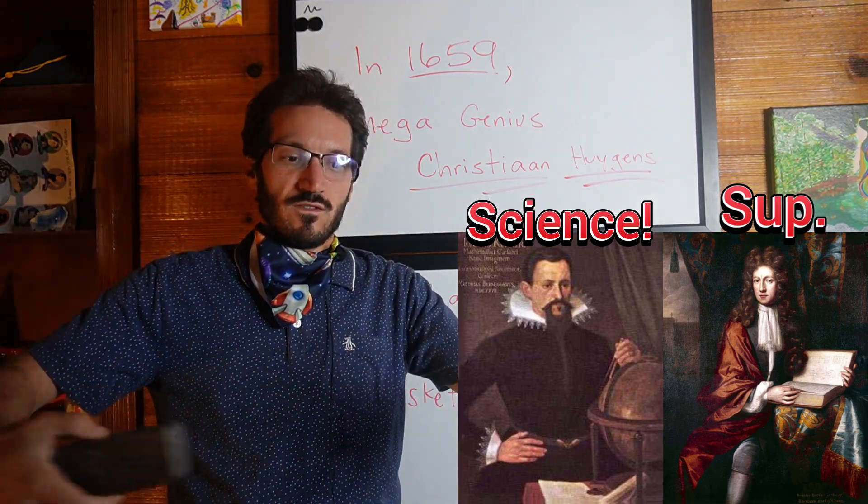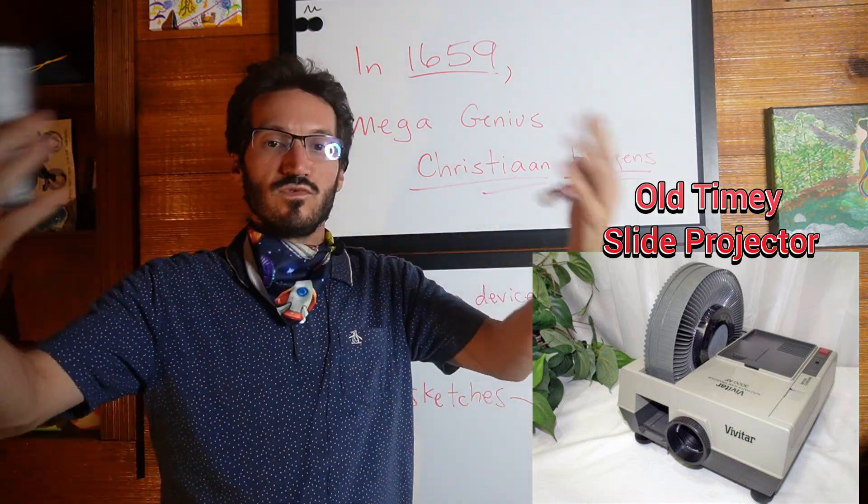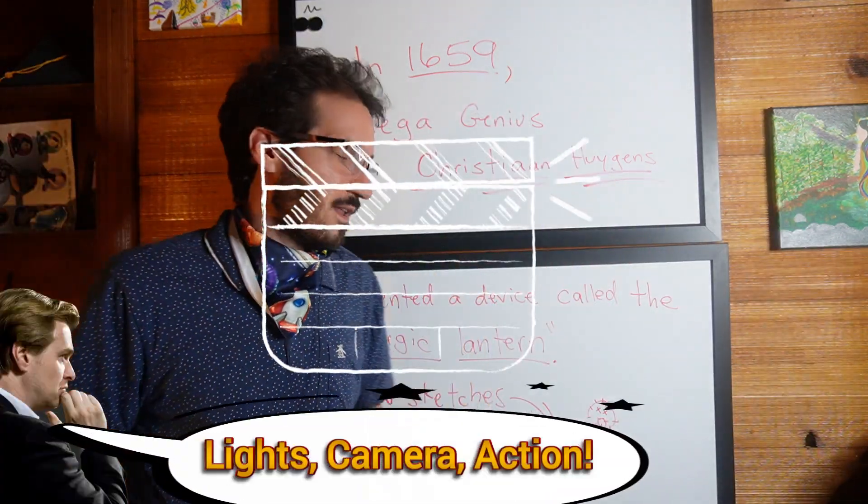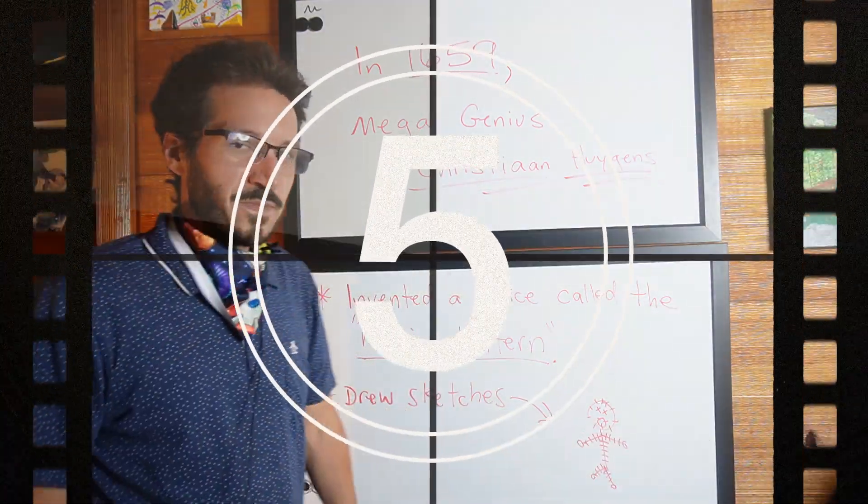But this first Magic Lantern was really cool and allowed the evolution of new camera systems. Then we had slide projectors, then eventually cameras, and eventually movie projectors. So how about that? Who knew that back in 1659, when Huygens made